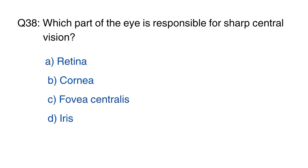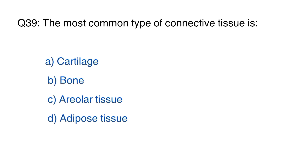Question number 38. Which part of the eye is responsible for sharp central vision? The right option is C, fovea centralis. Question number 39. The most common type of connective tissue is? The right option is C.